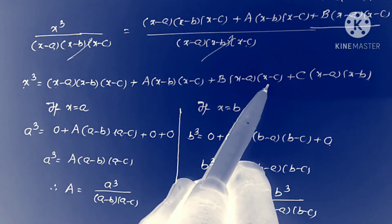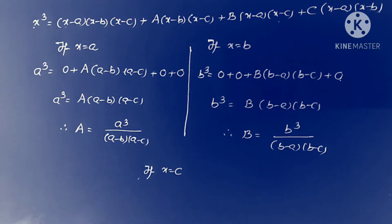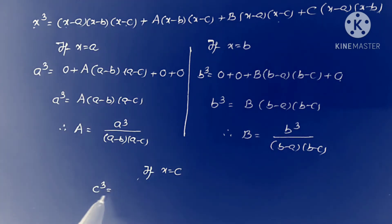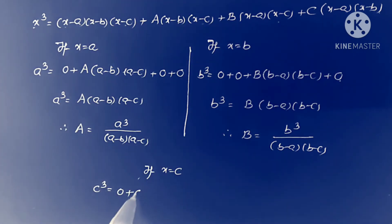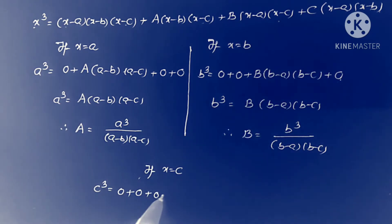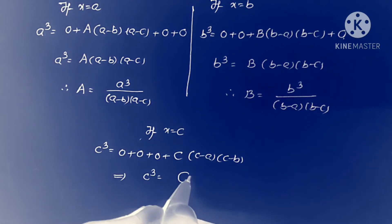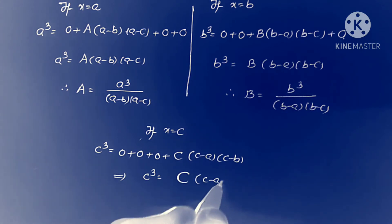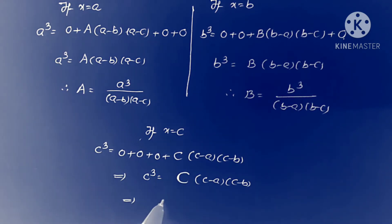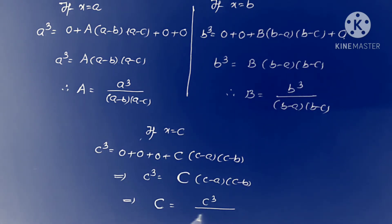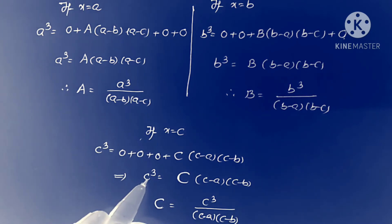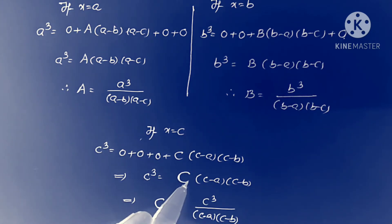Next, substituting x = c: (x-c) becomes 0, so the A and B terms vanish. We get c³ = C·(c-a)(c-b). Therefore the value of capital C equals c³ / [(c-a)(c-b)]. Note: here lowercase c is from the problem, and capital C is the constant we determined.